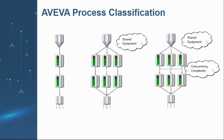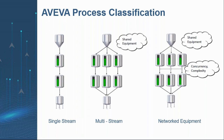No matter how complex your process is, it can be configured easily using Aviva Batch Management — either a single, multiple, or networked stream. A single stream structure is a group of units through which a batch passes sequentially. Multiple material inputs are commonly used, and multiple finished materials may be produced. The multiple stream structure consists of multiple single stream processes in parallel with no product transfer between them; however, they typically share the same raw material sources and product storage. Networked streams are the same as multiple streams, but there is no product transfer between them.